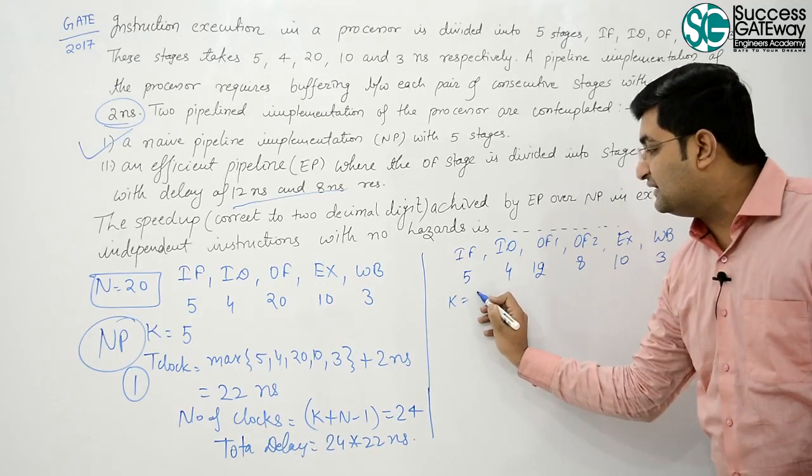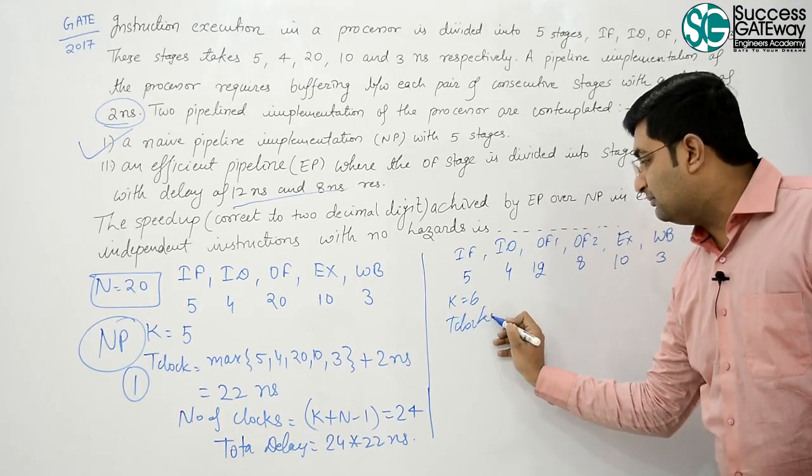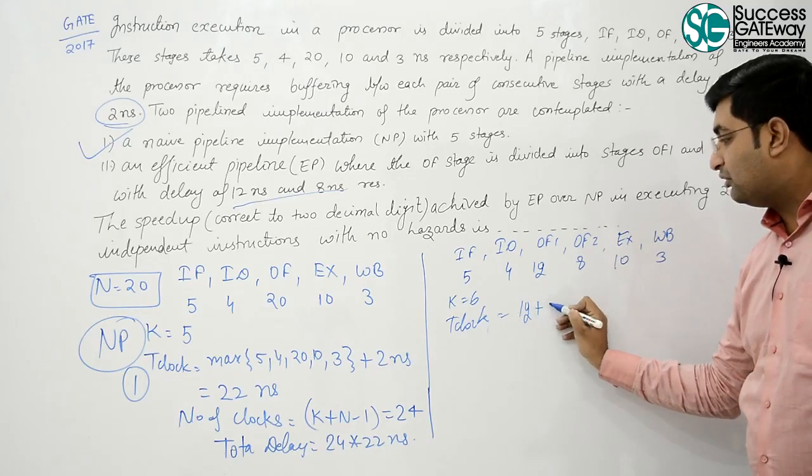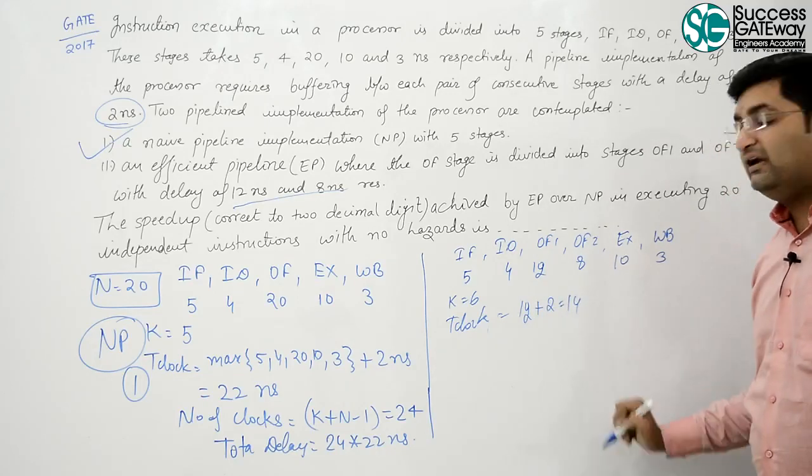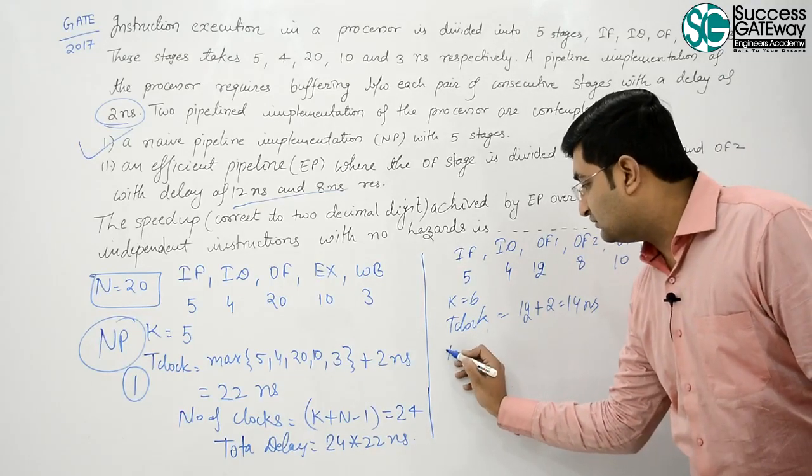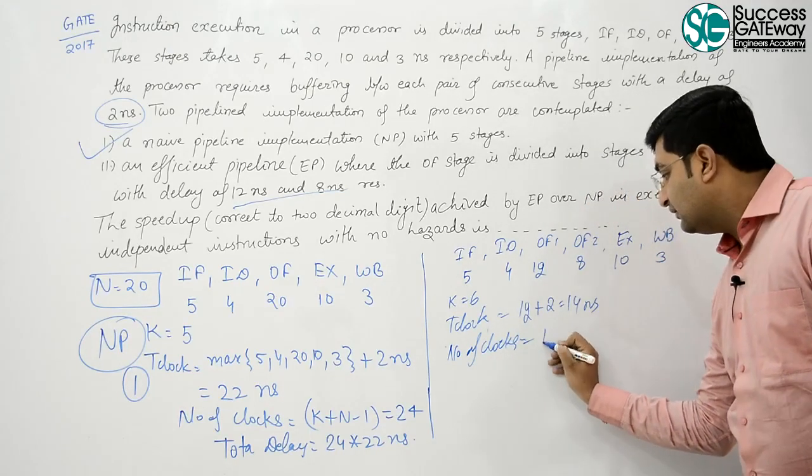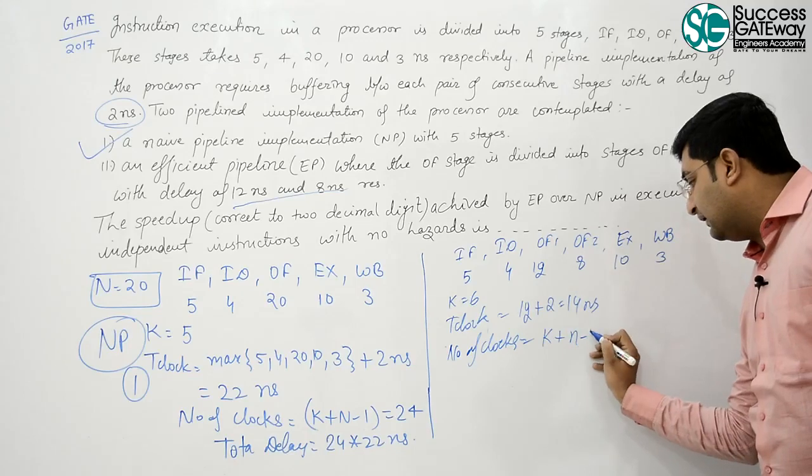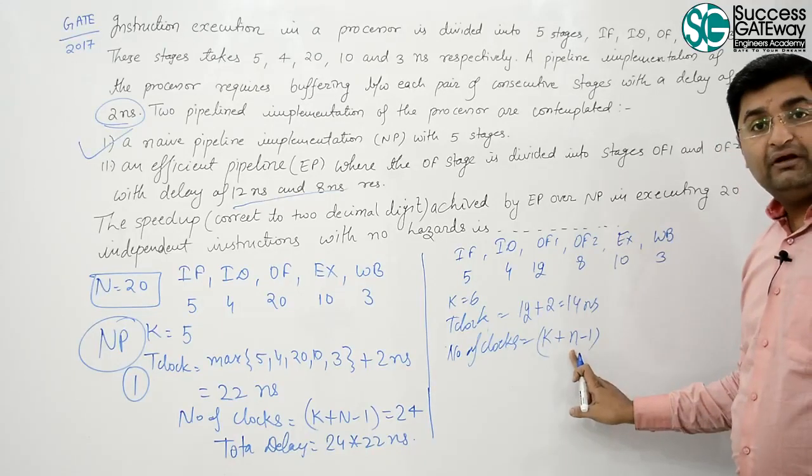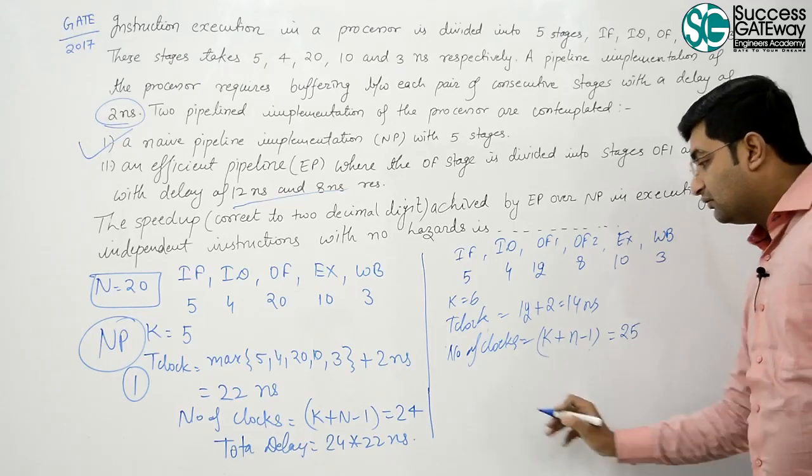Now, what is the number of stages? That is 6 now. T clock, the maximum is 12 plus 2 because of overhead. It will take 14 nanoseconds. Now, number of clocks is K plus N minus 1. Now K is increased by 1, that is 6. 6 plus 20 minus 1, that is 25.